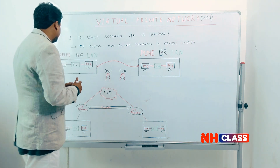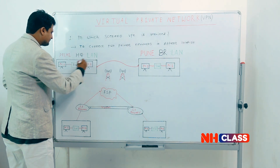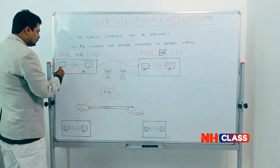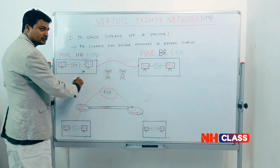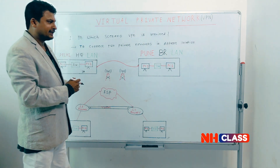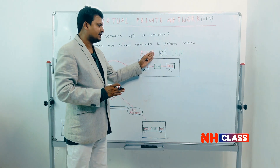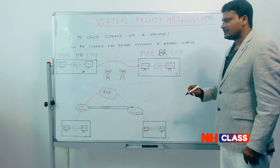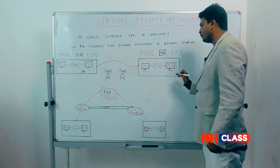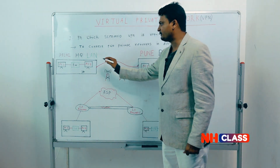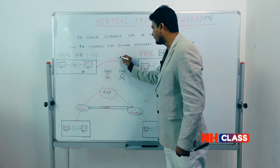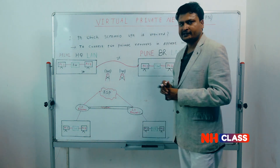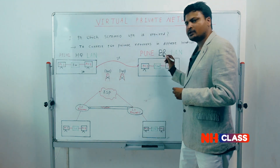Let's say I have one headquarter with a LAN network — maybe a hundred hosts or thousands of hosts. This LAN network has to be connected with a branch office in Pune, which also has multiple hosts, say 50. So I want to connect these hundred hosts with those 50 hosts in a different location. The distance between Delhi and Pune is around 2,000 kilometers. Is it possible to connect a wire between these two headquarters and branch offices to make connectivity between the two LAN networks?